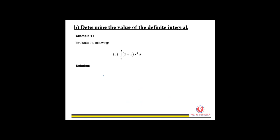Next question: the integration from 0 to 3 of (2−x)·x² dx. First, we have to expand the expression. Therefore we get 2x² − x³ dx. Next, we integrate the expression and get 2x³ over 3 minus x⁴ over 4.